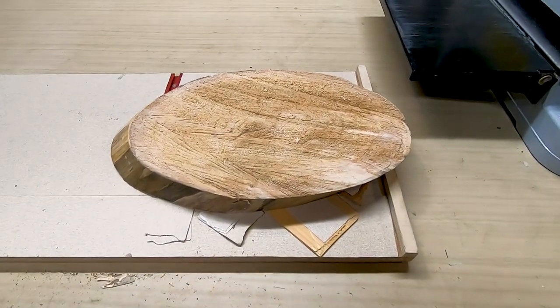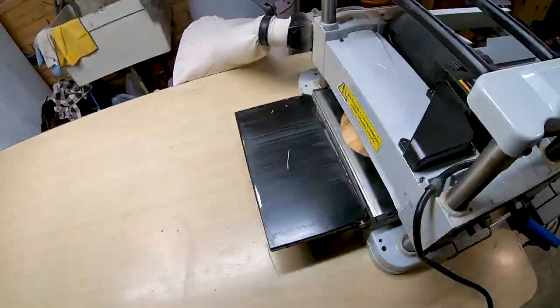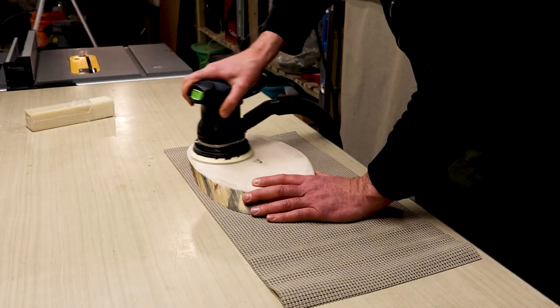I use a jointer jig, a few shims, and a planer to flatten one side of the oval, then flip it over and pass it through again on its own to make both sides parallel to each other. After sanding and applying some oil, we can now start building the robot.